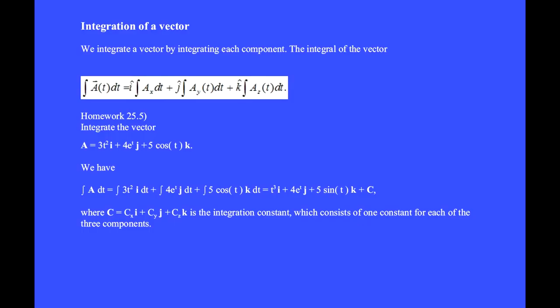We integrate a vector by integrating each component. The integral of the vector a of t dt is equal to i hat times the integral of the x component of a dt plus j hat times the integral of the y component of a dt plus k hat times the integral of the z component of a times dt.